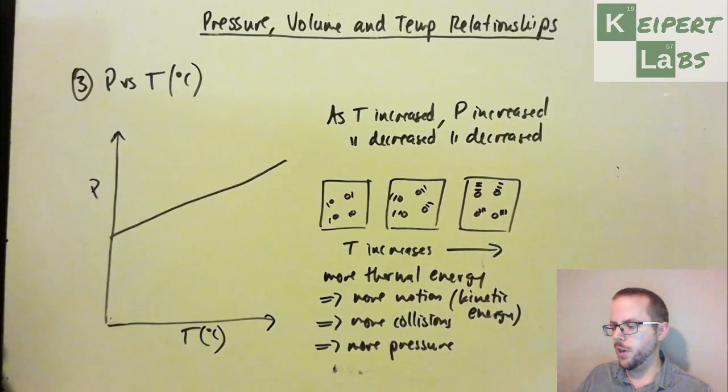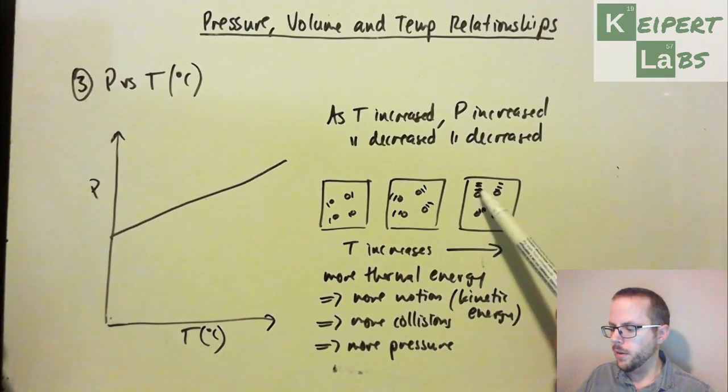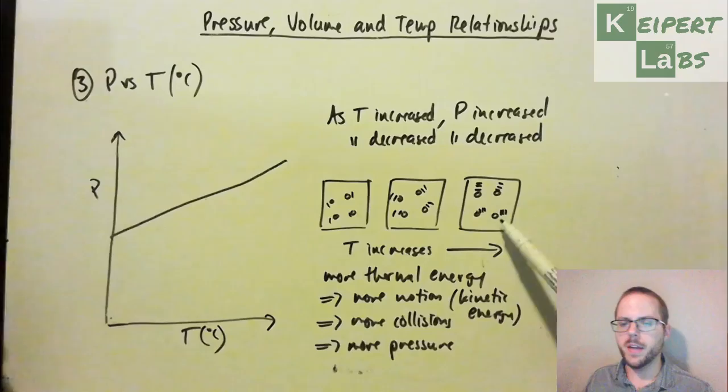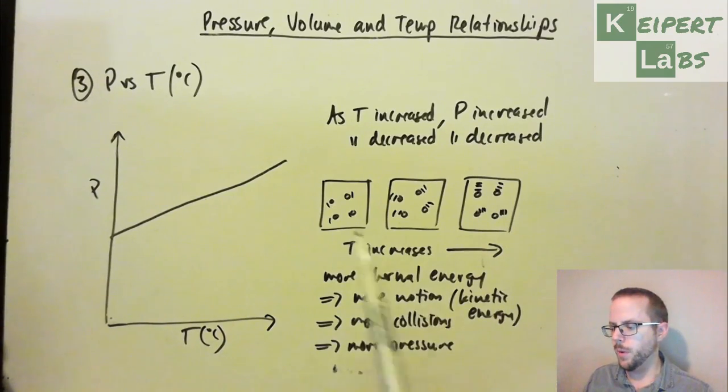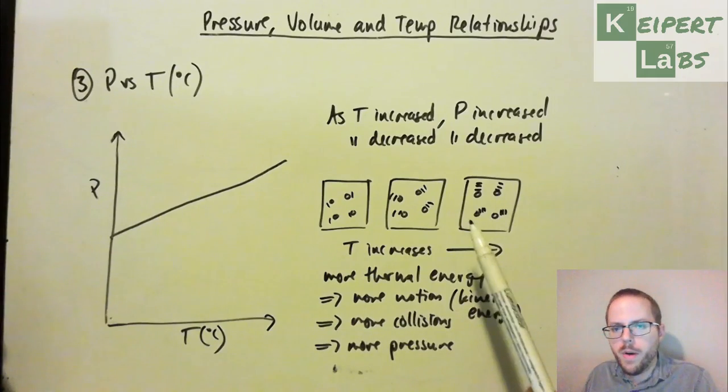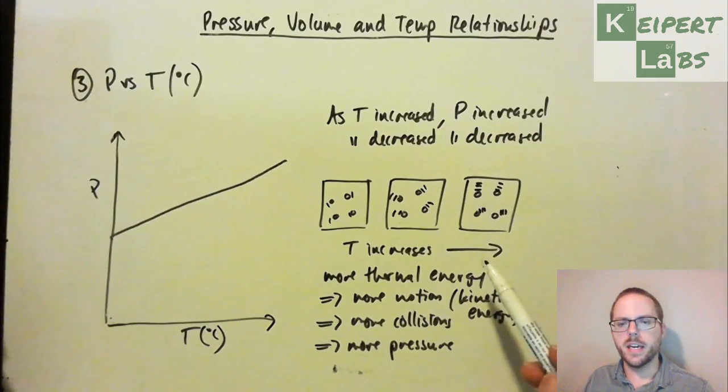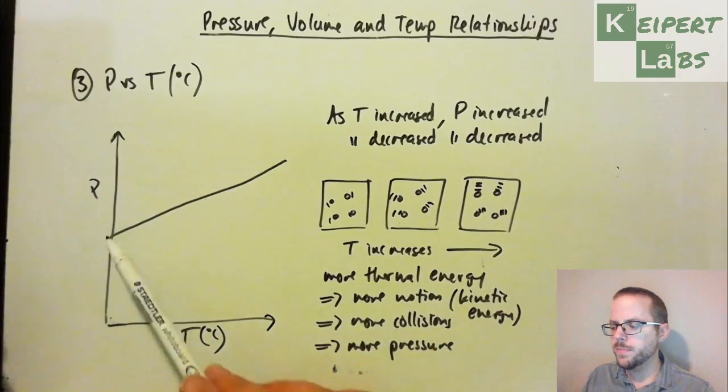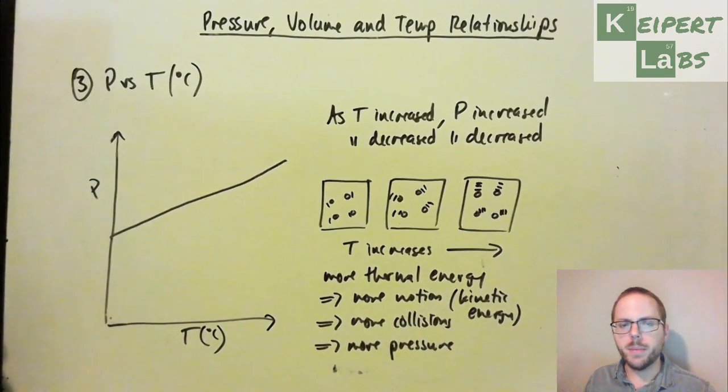So what I'm trying to represent in the diagram here with the little kind of trailing lines behind is the motion here. So as we're representing, we've got more motion, which means more collisions, more force as those particles hit the sides of the container as the temperature goes up.